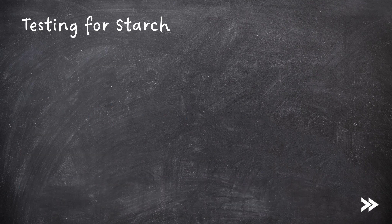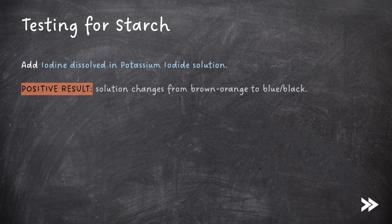The final test we need to know is the one for starch. For this we add iodine dissolved in potassium iodide solution. The positive result is that the solution changes colour from brown-orange to blue-black.